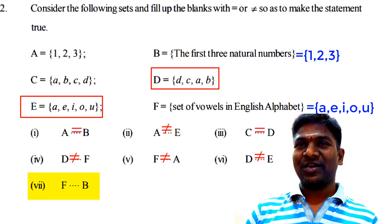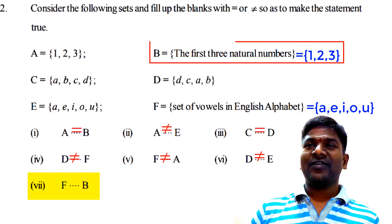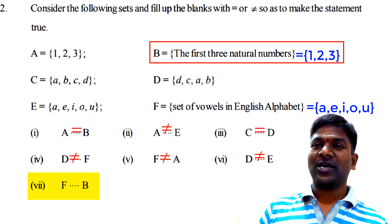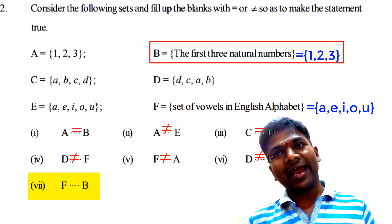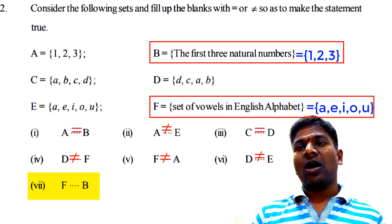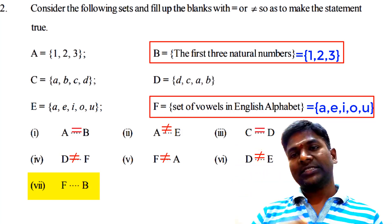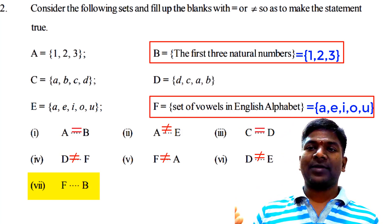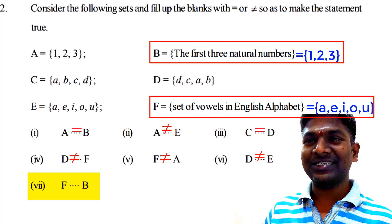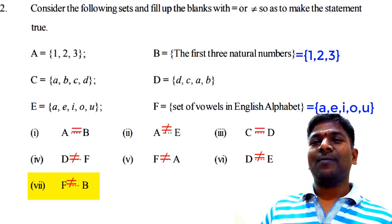Finally, F _ B. Set B consists of first three natural numbers: 1, 2, 3. Set F consists of the vowels of the English alphabet: A, E, I, O, U. Set B and set F have different elements, so F and B are not equal. Write F not equal to B. This completes the second question.